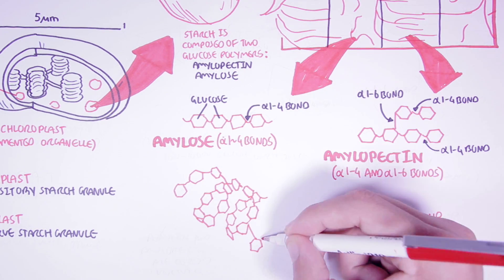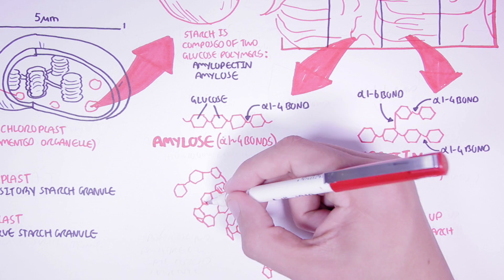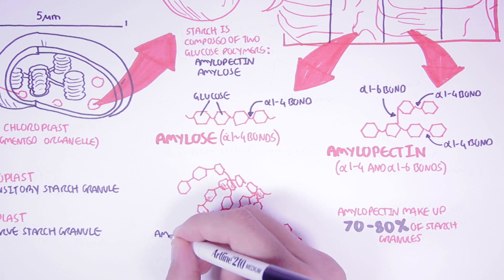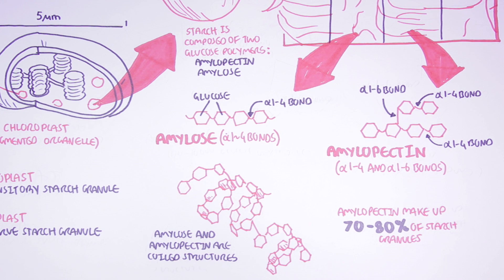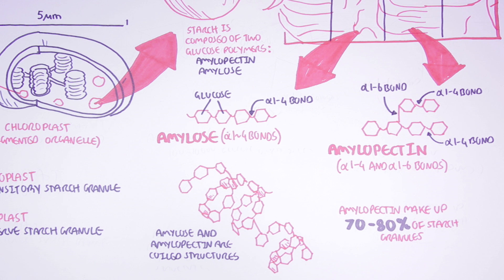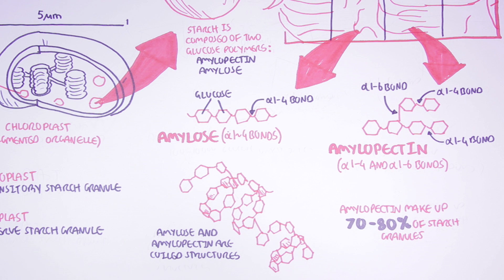In reality, amylose and amylopectin are not flat — rather, they form coils. Humans eat starch, and the amylose and amylopectin coils can be digested by humans to glucose, which will then be subsequently used for energy. Now that we know how starch is stored within the starch granules, let us see what happens when humans eat it.